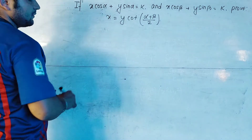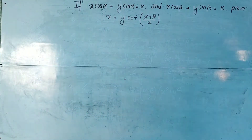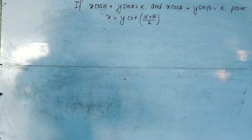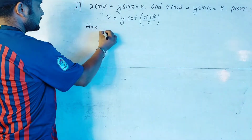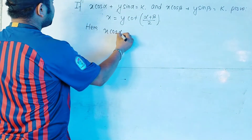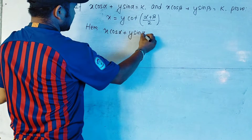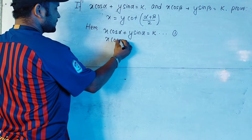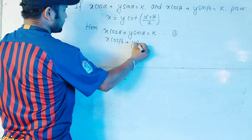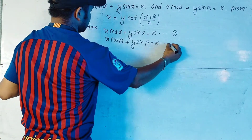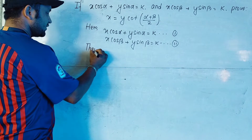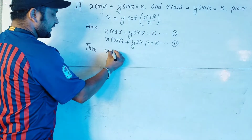First, let us write what has been given by the equation. At the first step, we write x·cos α + y·sin α = k and call it equation one. Similarly, x·cos β + y·sin β = k, and we call it equation two. Since equation one and equation two are both equal to k, we can equate them.